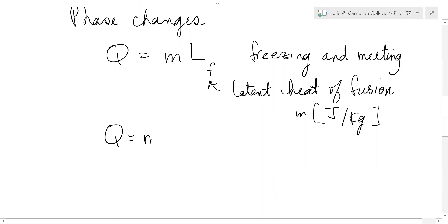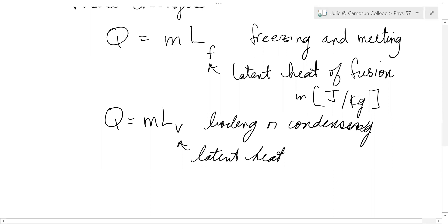Similarly, we have MLV. This would be for boiling or condensing. Once again, it doesn't matter which way you're going. Same amount of heat, either absorbed or given off. This is called the latent heat of vaporization. It's called latent because it's hidden. Latent means hidden. You can't see what's going on because the temperature doesn't change. But the phase changes, and that's where the heat goes. It goes into breaking the bonds or forming bonds.